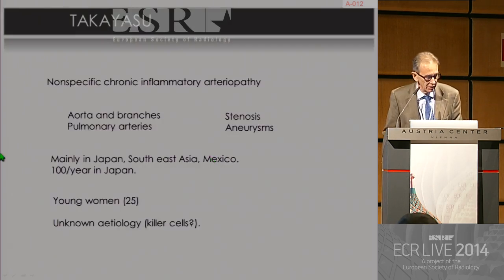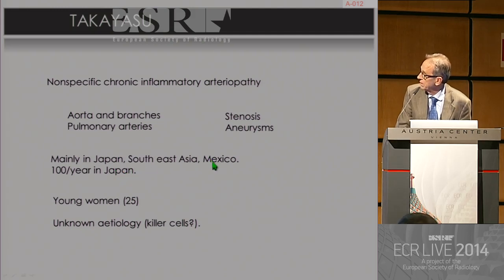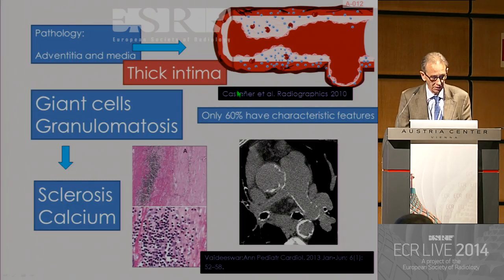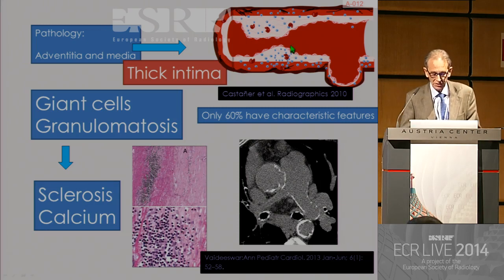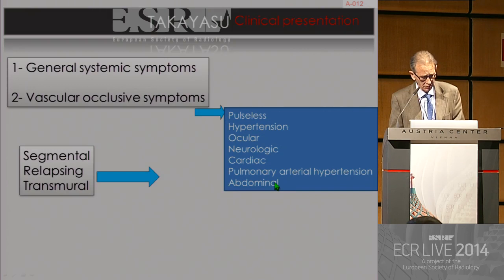Takayasu is a nonspecific chronic inflammatory arteriopathy that affects mainly the aorta and branches, and sometimes the pulmonary arteries, causing stenosis and aneurysm. It is mainly found in Japan, Southeast Asia, Mexico, and along the Silk Road. It mainly affects young women — and the age is important. The etiology is not very well known. There are giant cells, granulomatosis, and sclerosis, and patients end up having calcification of the wall, as seen in this case where you see not only the aorta but also the pulmonary arteries with calcifications.